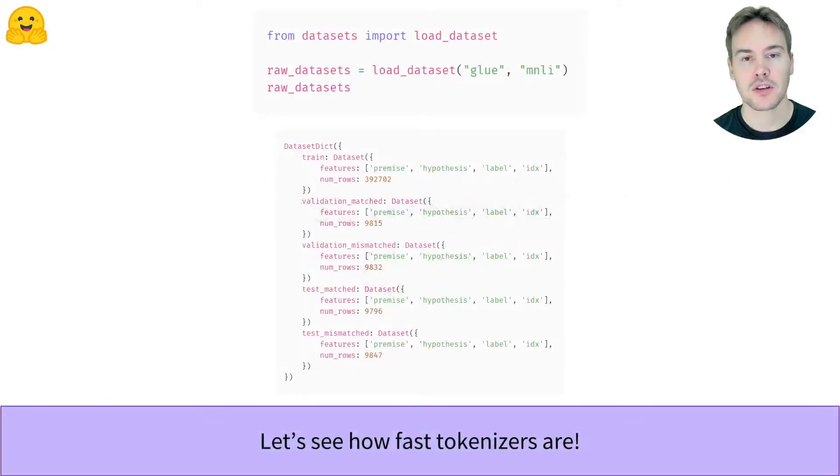For this benchmark, we'll use the Clue M&Lite dataset, which contains 432,000 pairs of text. We'll see how long it takes for the fast and slow versions of a BERT tokenizer to process them all.